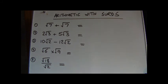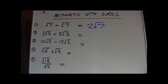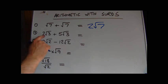7 plus root 7. We have two root 7's, so we can write the answer as 2 root 7. Very easy. We can do this process very easily when we've got like surds. So here we've got 2 root 3